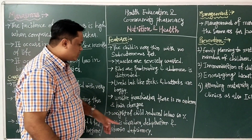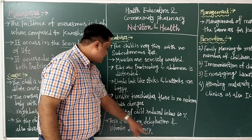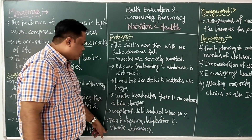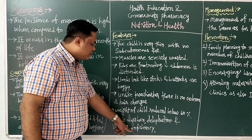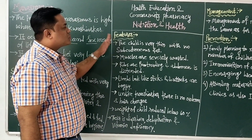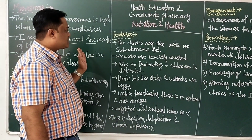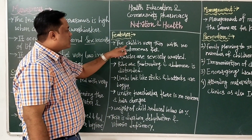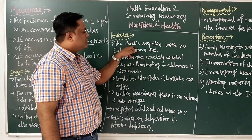There is also diarrhea, dehydration — meaning loss of electrolytes and water from the body — and vitamin deficiency. These are the features of marasmus.